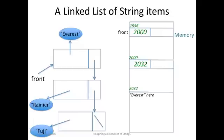At address 2004, which is the second part of the Everest node, is the address 1972, a pointer to the next node.